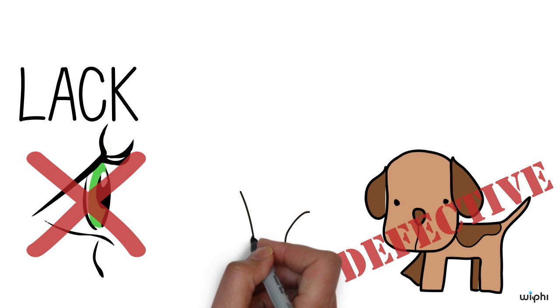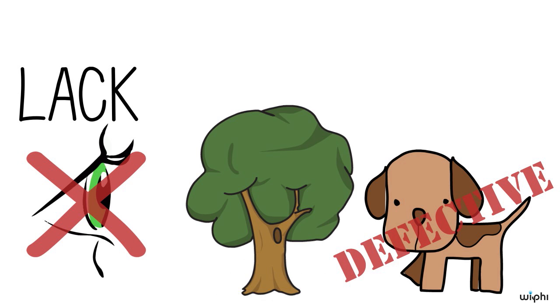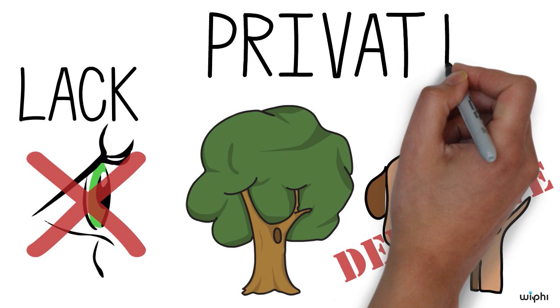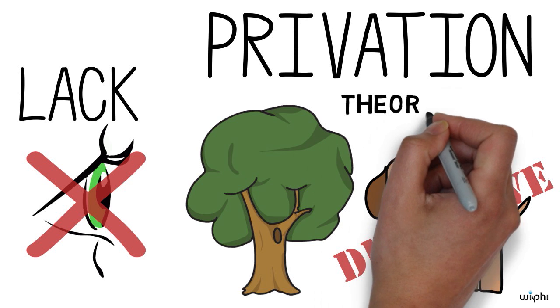By contrast, the absence of sight in an oak tree is not a defect, and it's not true that an oak tree ought to have the power of sight. A lack of a good which ought to be present is called a privation, and Augustine's account of evil is often called the privation theory of evil.